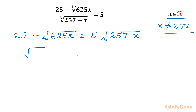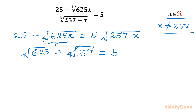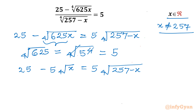Now the 4th root of 625 — we can write 625 as 5 to the power 4, so the power 4 and the 4th root cancel, giving us 5. So the equation becomes 25 minus 5 times the 4th root of x, equal to 5 times the 4th root of 257 minus x. Dividing through by 5, we get: 5 minus the 4th root of x equal to the 4th root of 257 minus x.